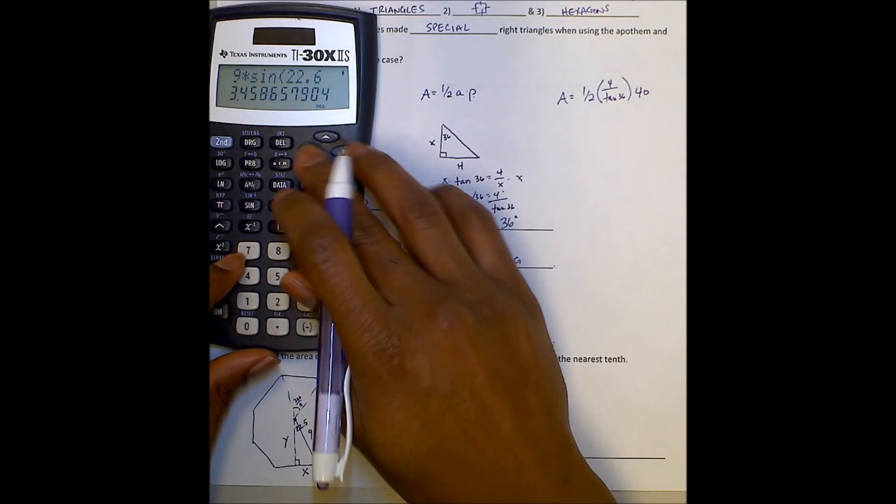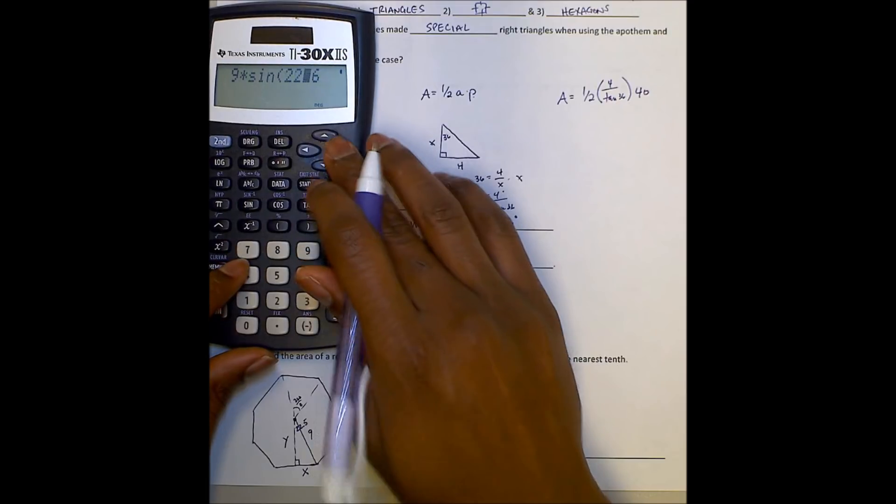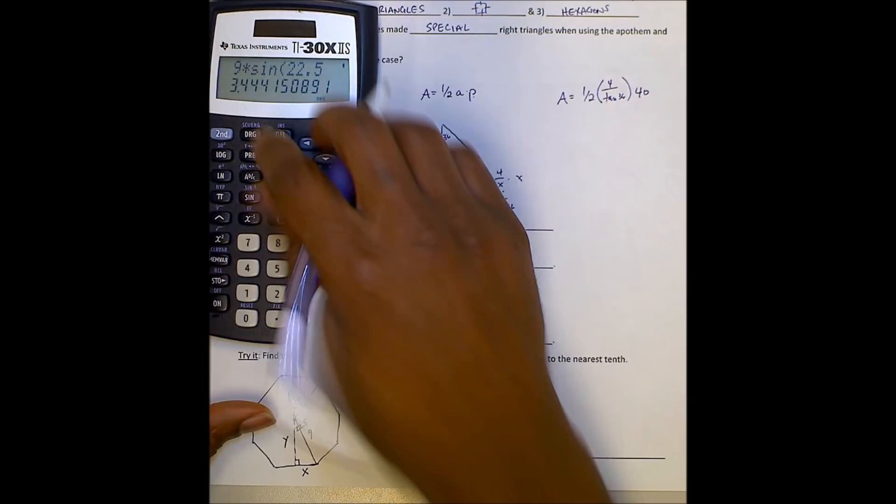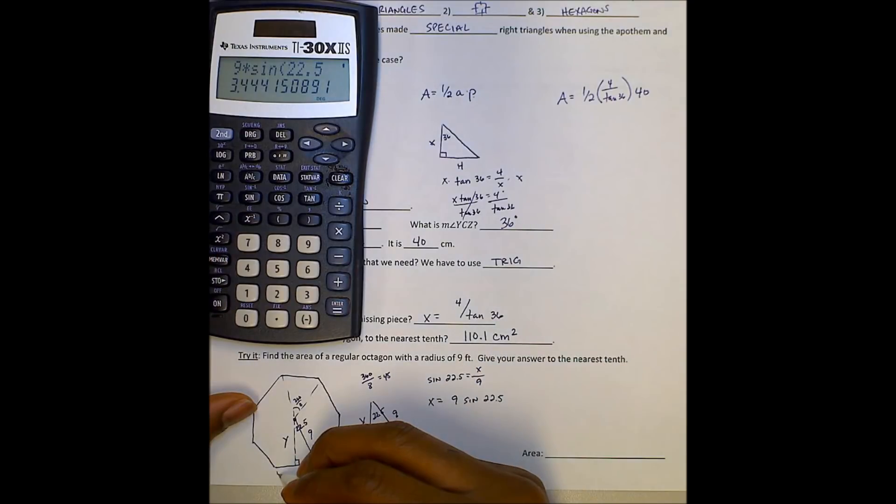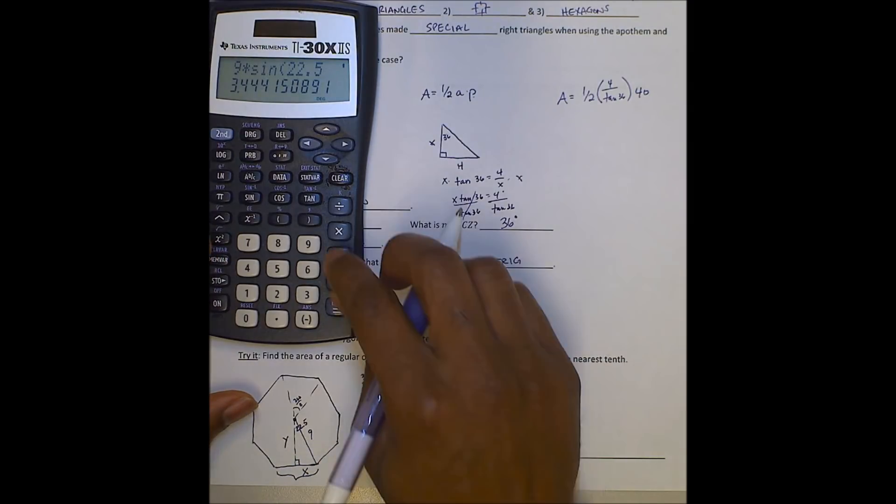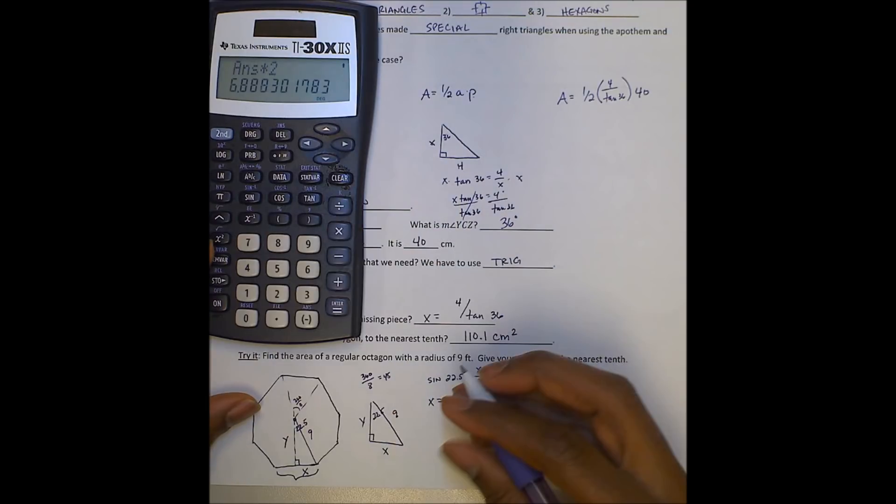Oops, messed up and put 0.6. Okay. And that will give me 3.4 repeating. All right. That side then will be double that. So we see that a side length is going to be 6.8. So X is like 3.44.